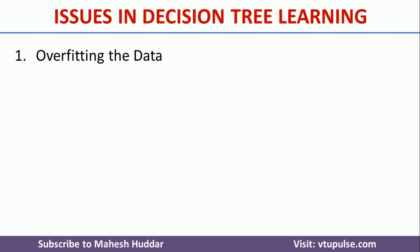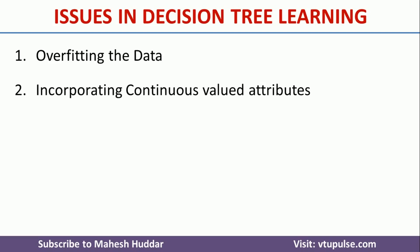The second issue in decision tree is incorporating the continuous valued attributes. The decision tree works well with problems where we have attribute value pairs, where a fixed number of attributes are there and a discrete number of possibilities for each attribute. If a particular attribute has continuous values, we cannot apply the decision tree directly. First, we need to convert those attributes which have continuous values into discrete possibilities, and then only we can apply decision tree learning.